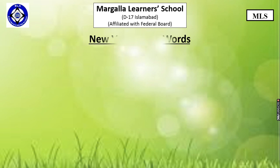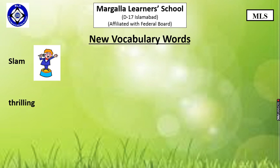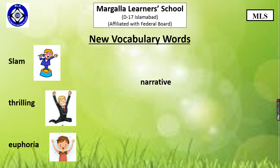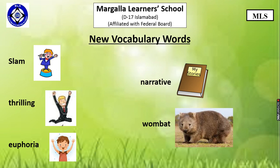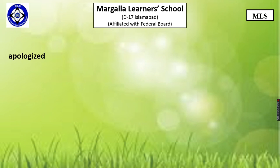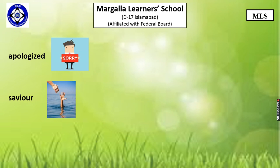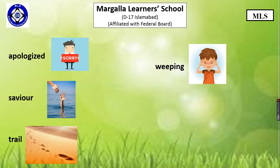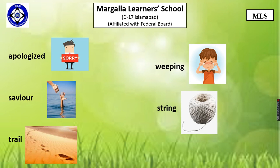First of all, let us come to know about some new vocabulary words. The first one is slam. Thrilling. Euphoria. Narrative. Wombat. Apologized. Savior. Trail. Weeping. And the last word is string.